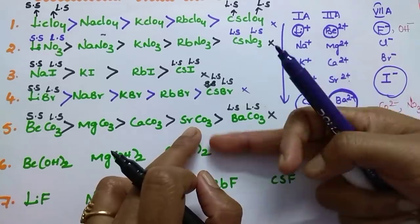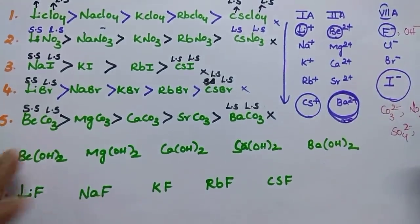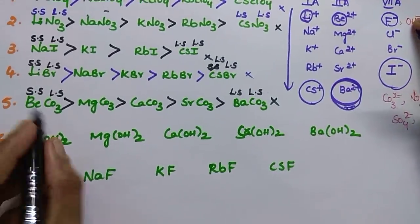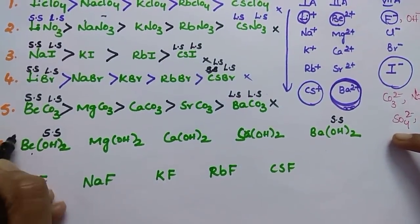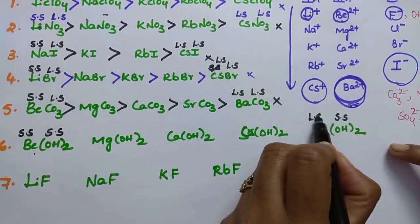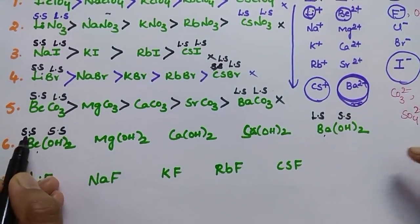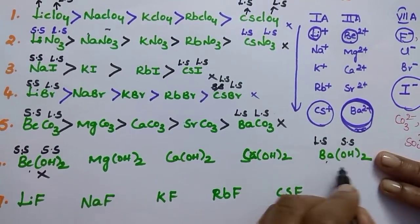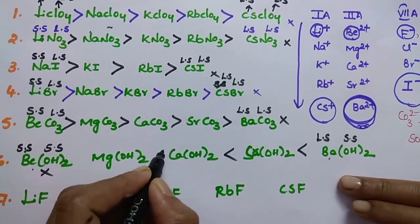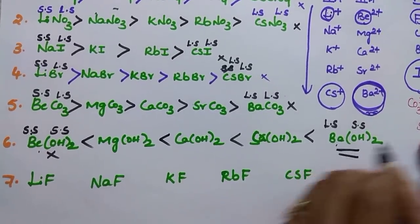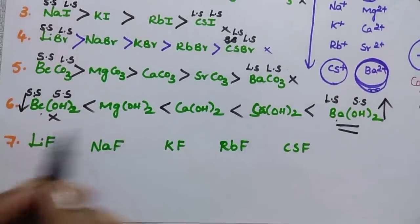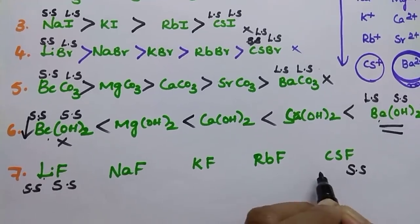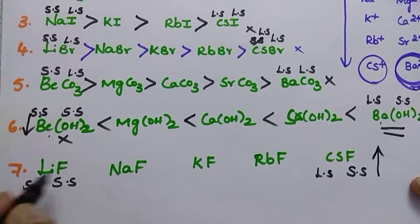For hydroxides: OH⁻ is a small-size anion. So the cation should be large to maximize the difference. Among Be²⁺, Mg²⁺, Ca²⁺, Sr²⁺, Ba²⁺ — Ba²⁺ is the largest. So Ba(OH)₂ has the most solubility, followed by Sr(OH)₂, Ca(OH)₂, Mg(OH)₂, and Be(OH)₂ has the least. For LiF: F⁻ is small-size anion, Li⁺ is small-size cation — less difference, less solubility. Cs⁺ large + F⁻ small = more difference = more solubility.